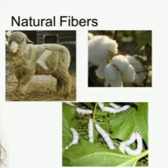Some fibers are made in factories. These are called man-made fibers or artificial fibers. Rayon, canvas, and nylon are man-made fibers. Nylon and canvas are very strong, light in weight, and waterproof in nature. These fibers are very strong and waterproof and are also used to make tent houses.